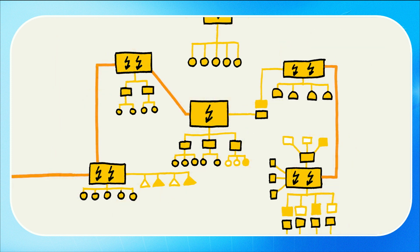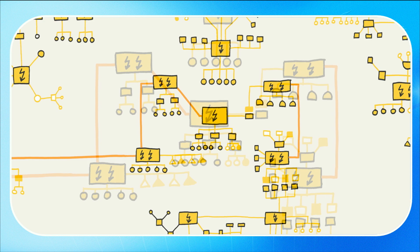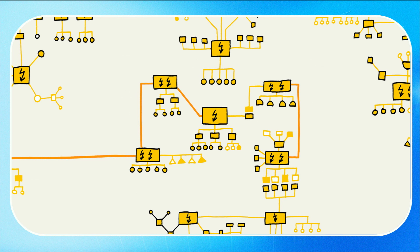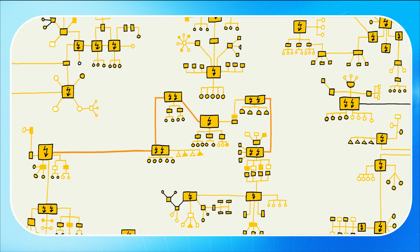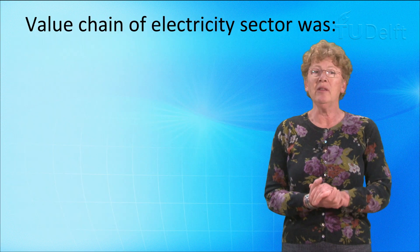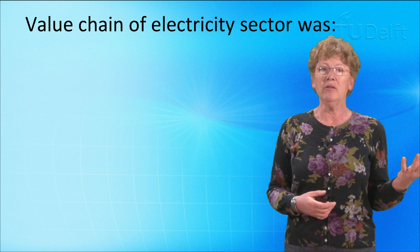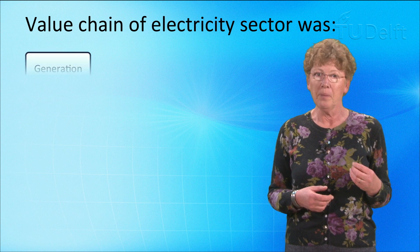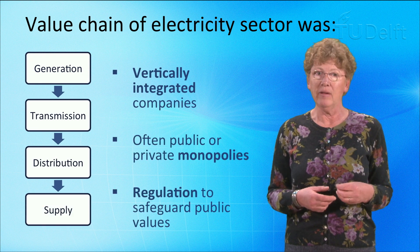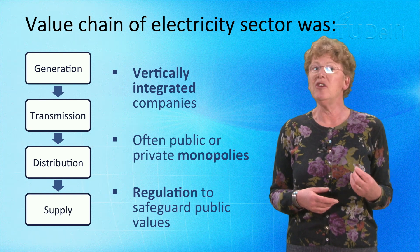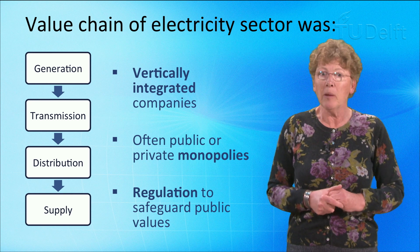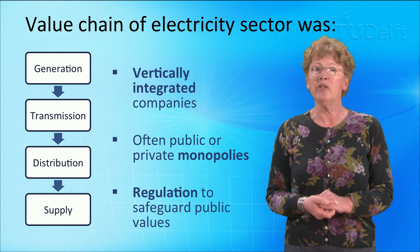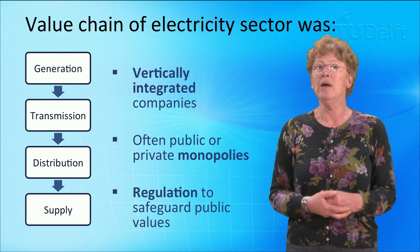Today's electricity infrastructures link these formerly separate networks into national and even supranational power systems. Moreover, these power systems are fed by an increasingly powerful and technologically diverse array of generators, delivering electricity for our daily needs. Throughout most of the 20th century, the key tasks of electricity generation, transmission, distribution and supply were concentrated within a single organization per country — a so-called vertically integrated utility. In many countries, this single organization was a public monopoly. In the case of a private monopoly, it was heavily regulated by the government to safeguard affordability, availability, safety and other public values.